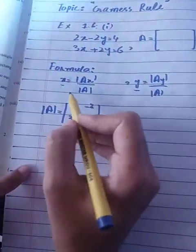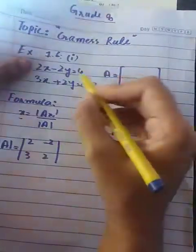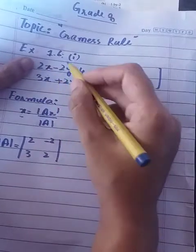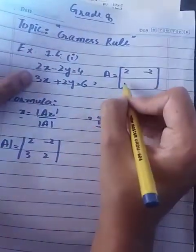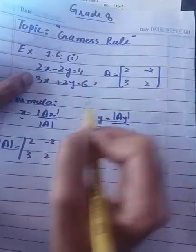First of all, we'll write out what's the set A. So write all the coefficients in your equations: 2 is the coefficient, -2 is the coefficient, 3 and 2 are the coefficients. This is set A.